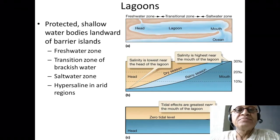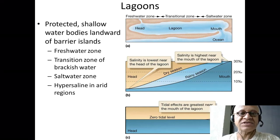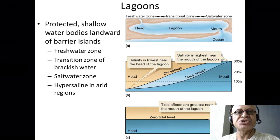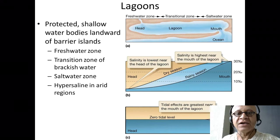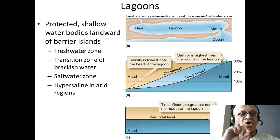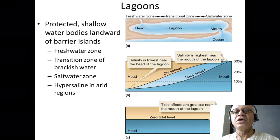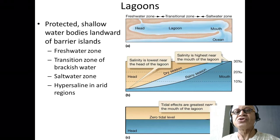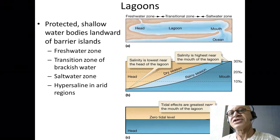Let's run through some more types of estuaries before we go to estuarine circulations. Lagoons — we already mentioned these when we looked at the coastal physiographies. The positional coast, the way waves work and the circulation, the longshore drift works — you end up with a barrier which traps some of the water behind the lagoon, and you end up with this lagoon with a head which is getting probably some fresh water through the rivers.